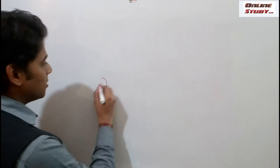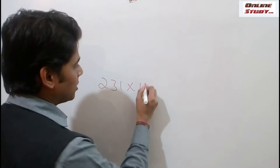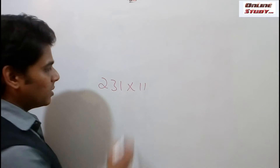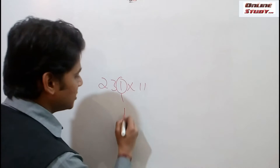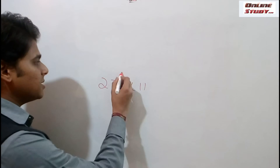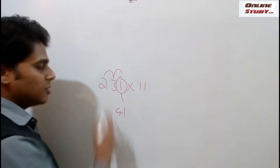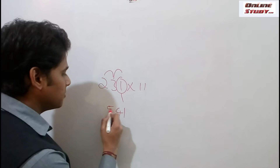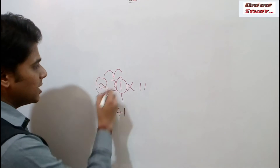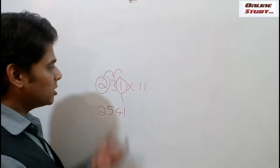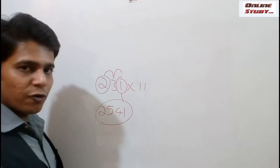Friends, now let's see how the multiplication of 11 with 3-digit, 4-digit, and 5-digit numbers can be done. We shall multiply 231 into 11. First, we need to place the units place as it is — that is 1. Next step: add 1 plus 3, that is 4. Next step: 3 plus 2, that is 5. And the final step is place 2 as it is. So the multiplication of 231 into 11 is 2541.